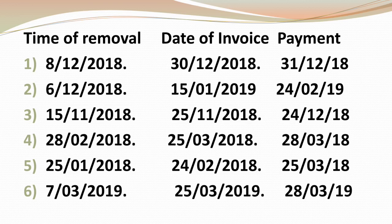So 6th December 2018 becomes the Time of Supply for Case 2. For Case 3, dates are 15/11/2018, 25/11/2018, and 24/12/2018 — the earliest is 15/11/2018, so that is the Time of Supply. For Case 4, dates are 28th February 2018, 25th March 2018, and 28th March 2018 — the earliest is 28th February 2018. For Case 5, dates are 25th January 2018, February 2018, and March 2018 — January comes first so Time of Supply is 25th January 2018.